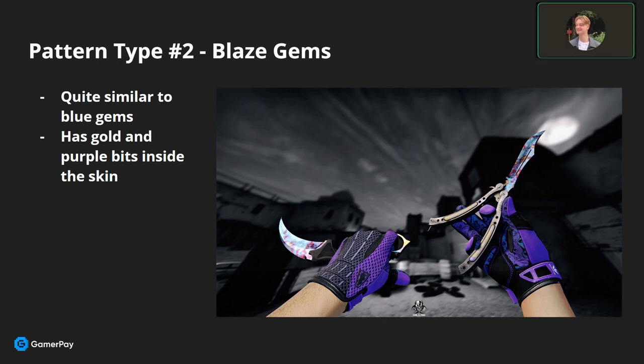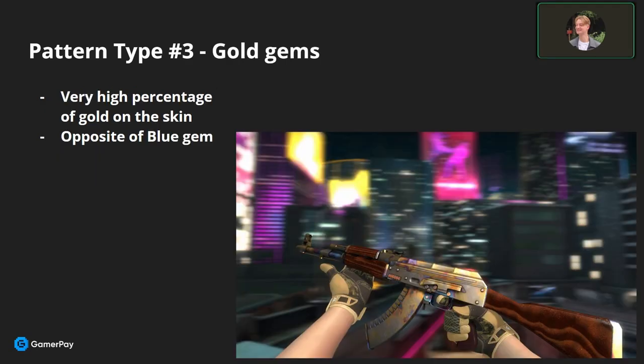The main difference with blaze gems is that they have actual gold and purple bits inside of them. People only really consider these nice blaze gems when the coverage is 100% consisting of blue, purple, and gold. Next to that, you also have other Case Hardens called gold gems. These are AKs or knives with a very high percentage of gold instead of blue, and these can also impact the value. There is also a very niche community who really likes these and are willing to pay quite a bit for them.